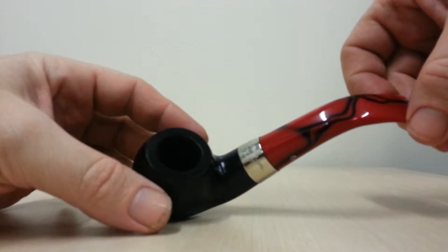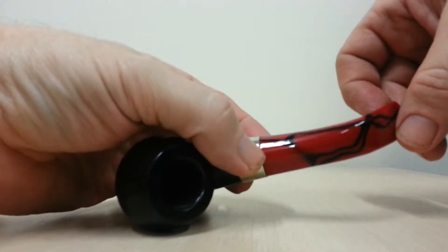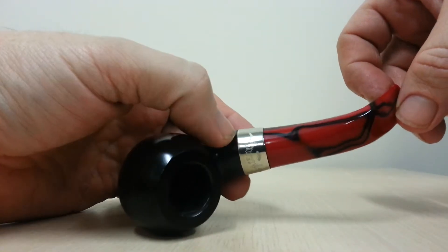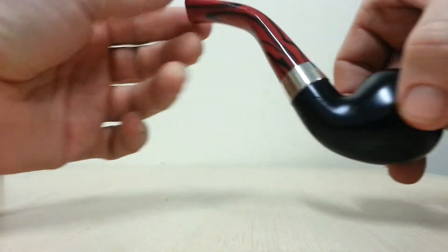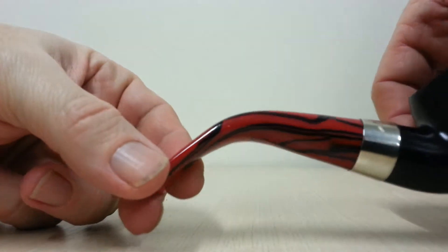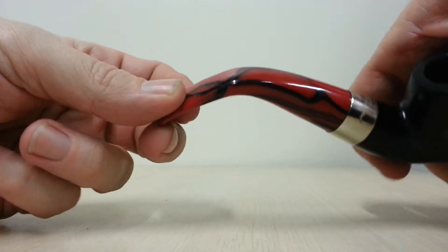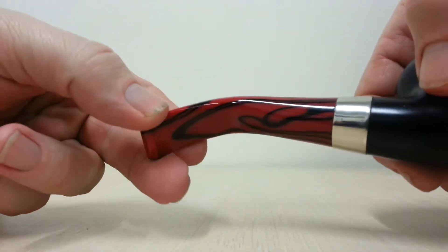Obviously, one of the things you buy these for is the nice acrylic stems, and I wanted one that's got a nice black swirl through the red. He was good enough to have a look through and pick one that was to my description.